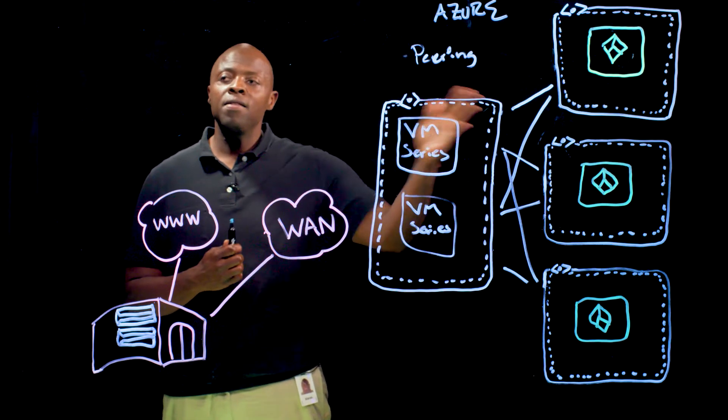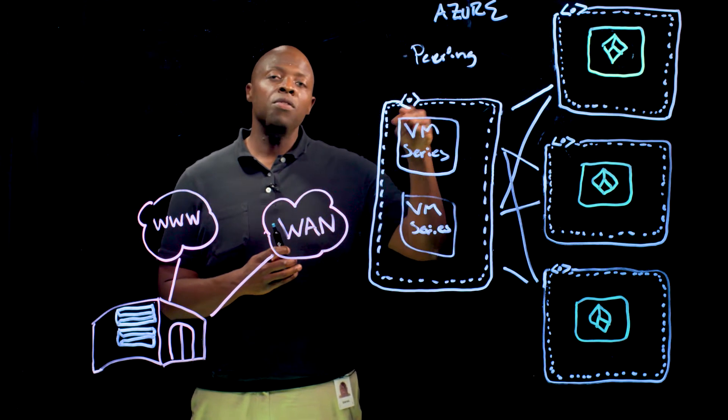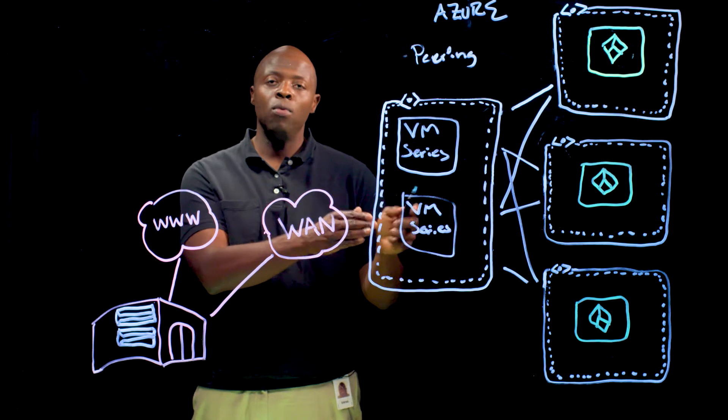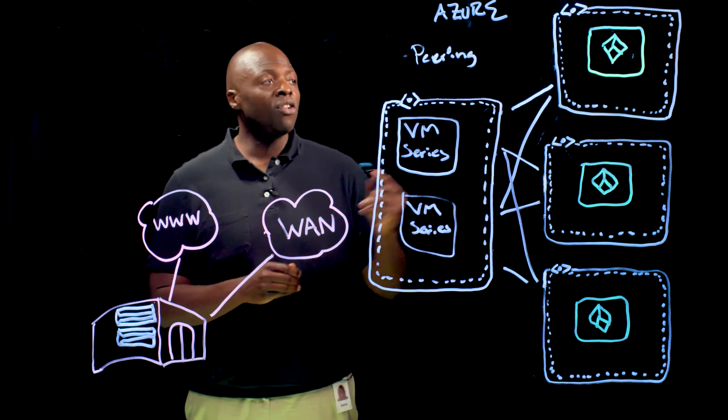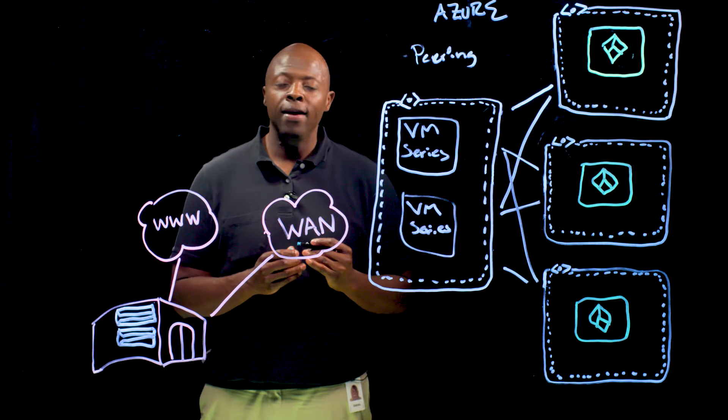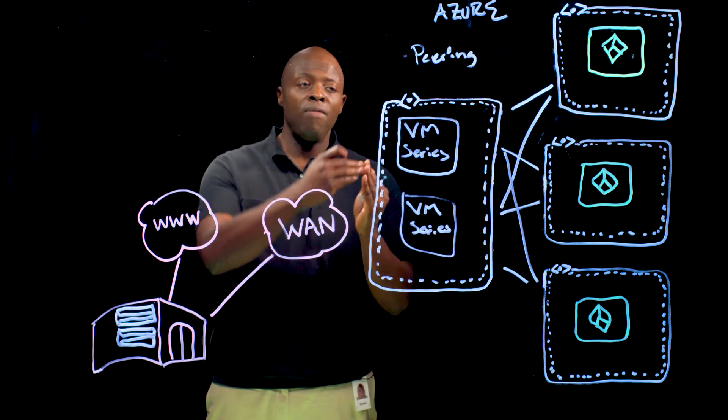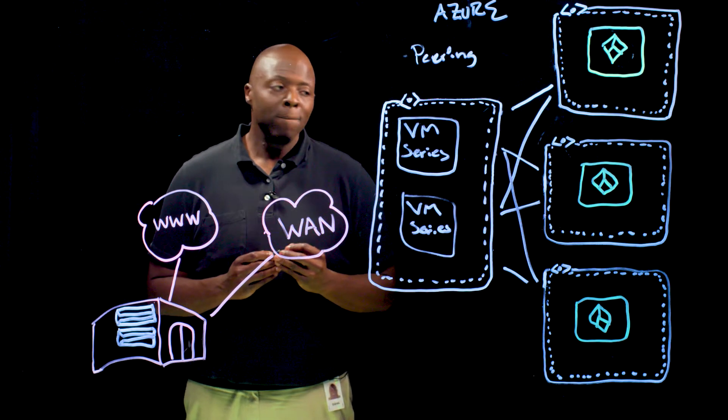What this does is regardless of how your workload is configured in the Transit VNet spoke, the user-defined route will tell it this is where you need to go for outbound connectivity. This effectively gives us a way to control all outbound access and steer traffic from each virtual network to the VM series firewall for outbound connectivity. This allows us to provide visibility within the network for both east-west traffic and north-south traffic. So if you have zero trust policies within your network, this is in full compliance.